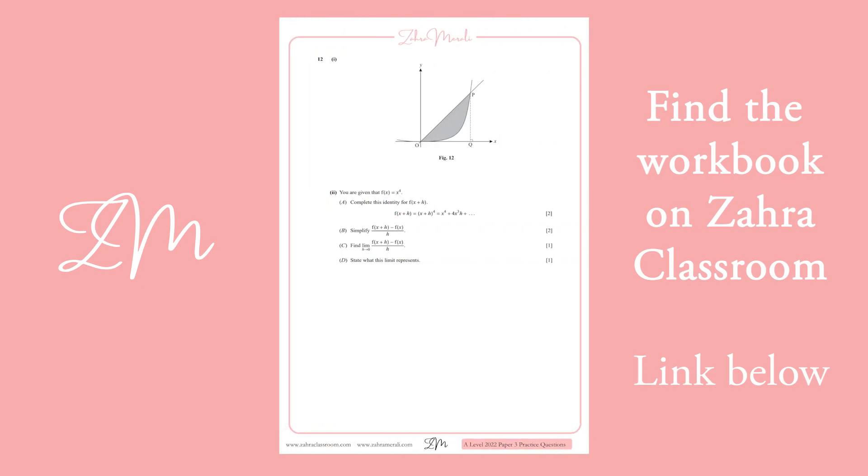Okay, the second part of this question, you are given that fx equals x to the power 4. So, it says to complete the identity. Essentially, you're using binomial expansion to open this out. So, we've got x plus h to the 4, which will be x to the 4, plus 4x cubed h, plus 6x squared h squared, 4x h cubed, plus h to the 4.